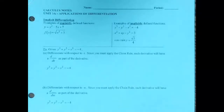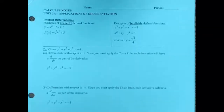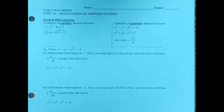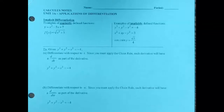What does it mean to take the derivative implicitly? Explicitly defined functions means my variables are separated — I have all the x's on one side and all the y's on the other, which is typically what you get in every math class up until now. The exception would be conic sections in pre-calc. Implicit just means I have x's and y's together on the same side of the equation. Implicit differentiation means taking the derivative when you have multiple variables mixed together. If the variables don't match, you need to do chain rule.